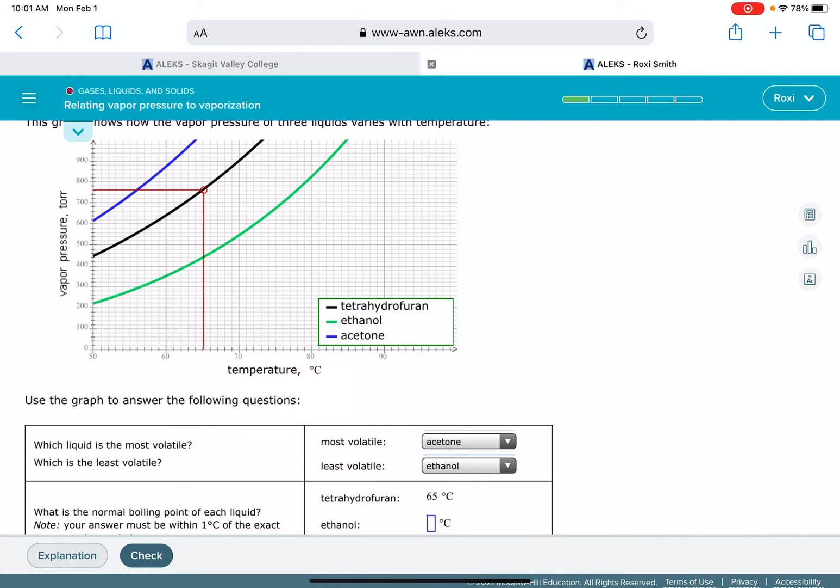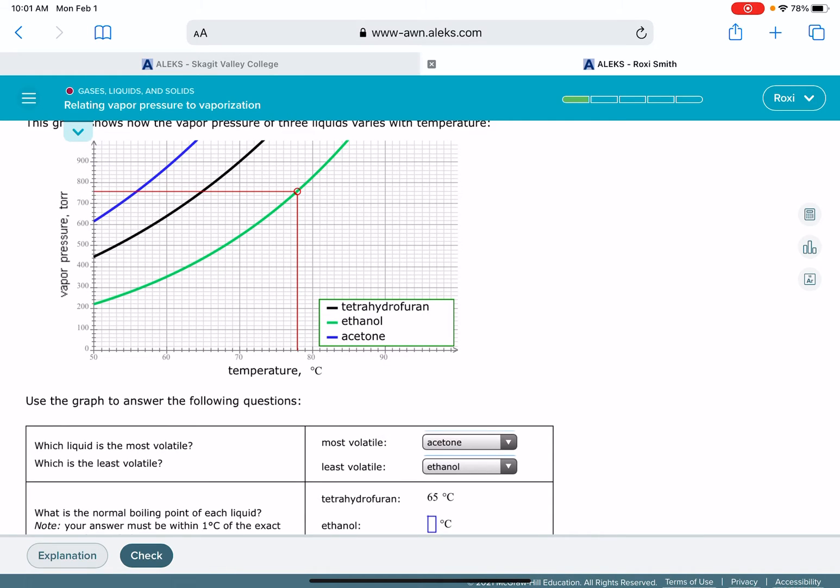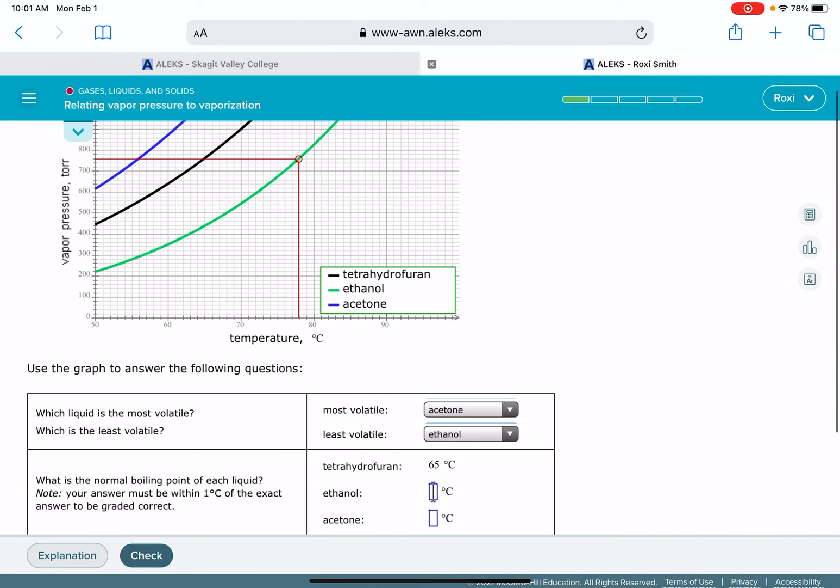And for ethanol, ethanol is the green line on my graph. Again, I want to find the temperature that corresponds to 760 torr. That looks like 78 degrees.